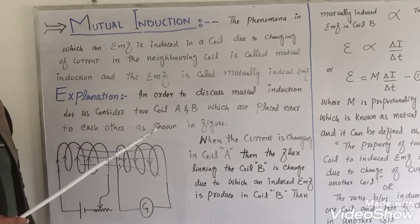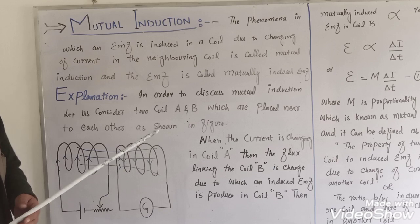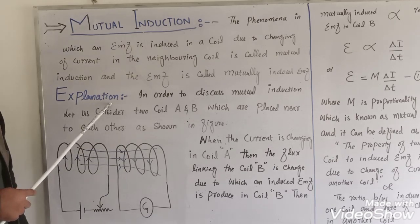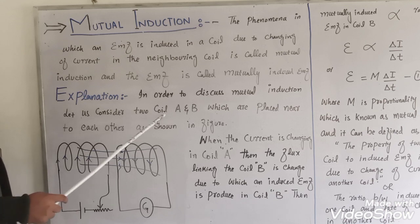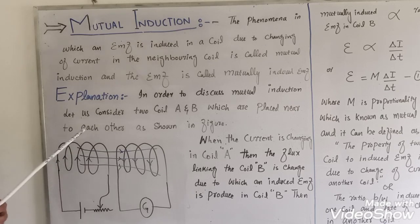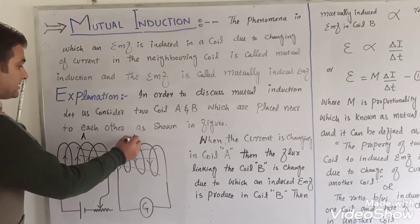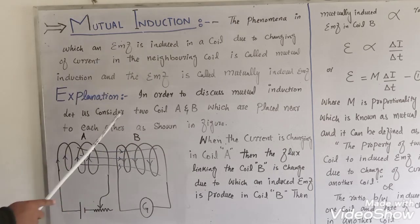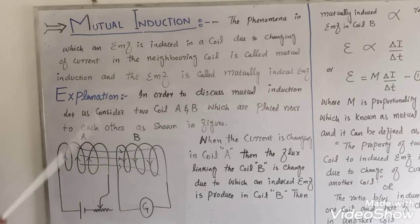To discuss mutual induction and derive its mathematical relation, we consider two coils A and B. As you can clearly see in the diagram, one coil is coil A and the other is coil B. These two coils are placed near to each other, as shown in the figure.